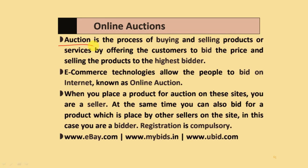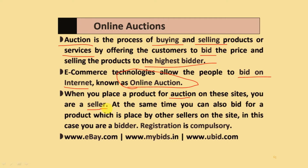Online auctions: an auction is the process of buying and selling different products or services by offering customers the ability to bid on a price and selling to the highest bidder. E-commerce technologies allow people to bid on the internet — this is known as online auction. When you place a product for auction on a site, you are the seller; when you bid on a product placed by others, you are the bidder. Registration is compulsory on these websites. Examples include ebay.com, mybeads.in, and ubead.com.